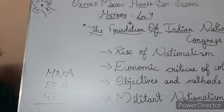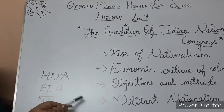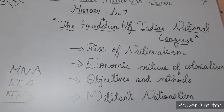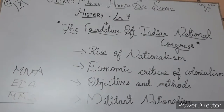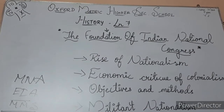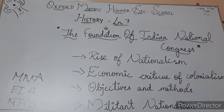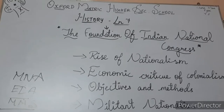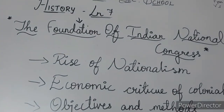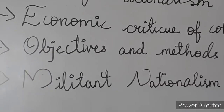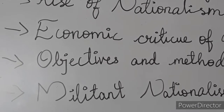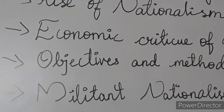Now we will learn about the objectives and methods of the Indian National Congress. The formation of the Indian National Congress in 1885 was intended to establish an all-India organization. It was a culmination of attempts by groups of educated Indians — only educated Indians started the INC.